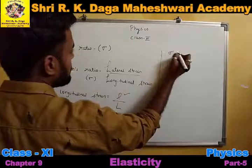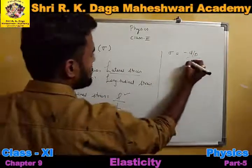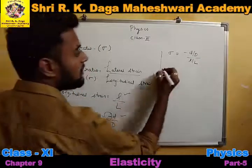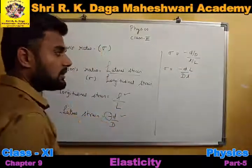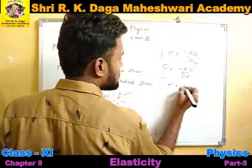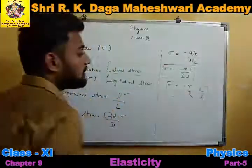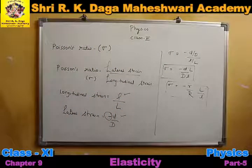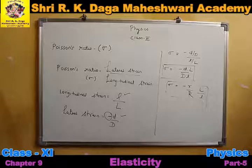If I put in the values, sigma is equal to lateral strain, that is minus delta D upon D, upon longitudinal strain, that is small l upon L. You get sigma equals minus delta D upon D divided by l upon L. This is when we have the diameter of the wire. Usually in equations we have the radius, so in radius form: sigma equals minus delta R times L upon R times l. In this way we can get the formula for Poisson's ratio.